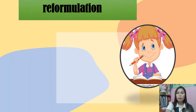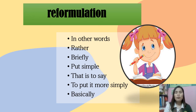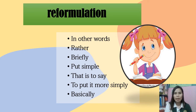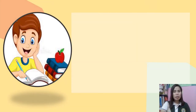Next we have reformulation. Examples include: in other words, rather, briefly, put simply, and more. These words or phrases signal that a writer is about to summarize or come to a conclusion. It is an error correction technique — in reformulation we say things 'in other words,' 'that is to say,' or 'basically,' meaning we are summarizing.